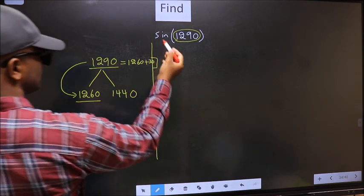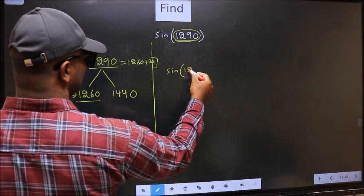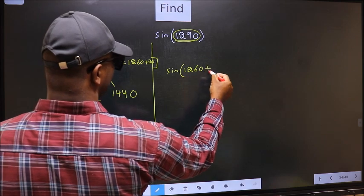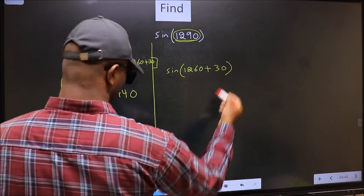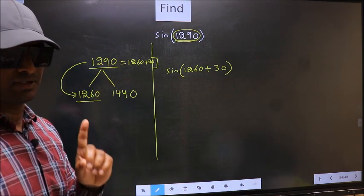So this will become sin. In place of this, now we should write 1260 plus 30. This is your step 1.